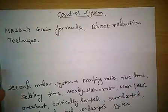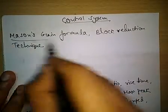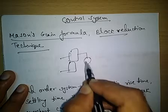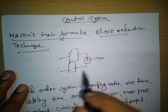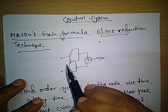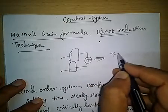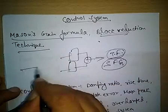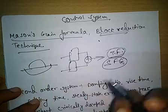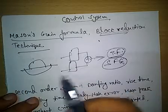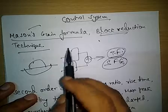The first topic is Mason's Gain Formula and Block Reduction Technique. Blocks can be given in some form with summations, and we have to minimize the blocks using block reduction properties to finally find out the transfer function. Another topic is Signal Flow Graph — a signal flow graph will be given with many loops, and the gain for each path will be given, so we have to find out the loop gain and other parameters.